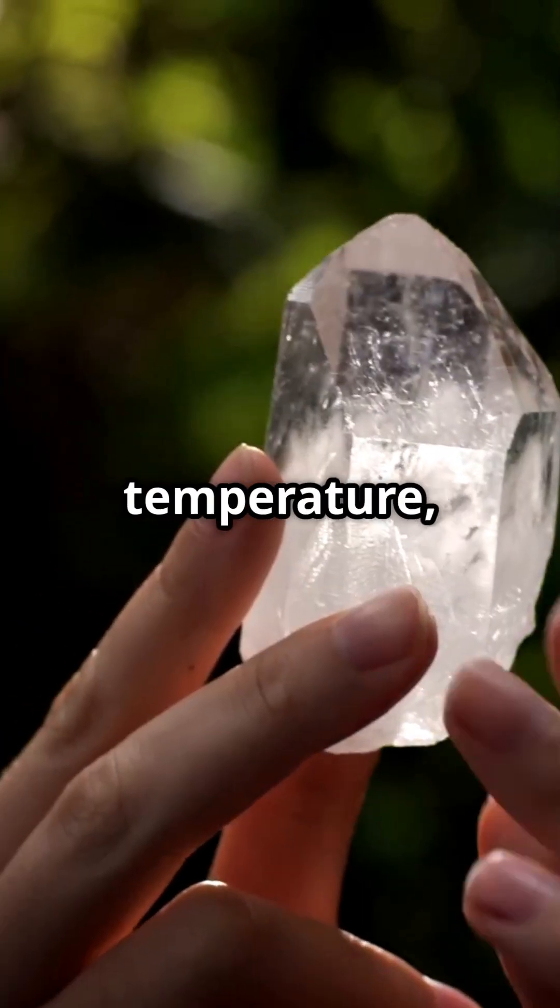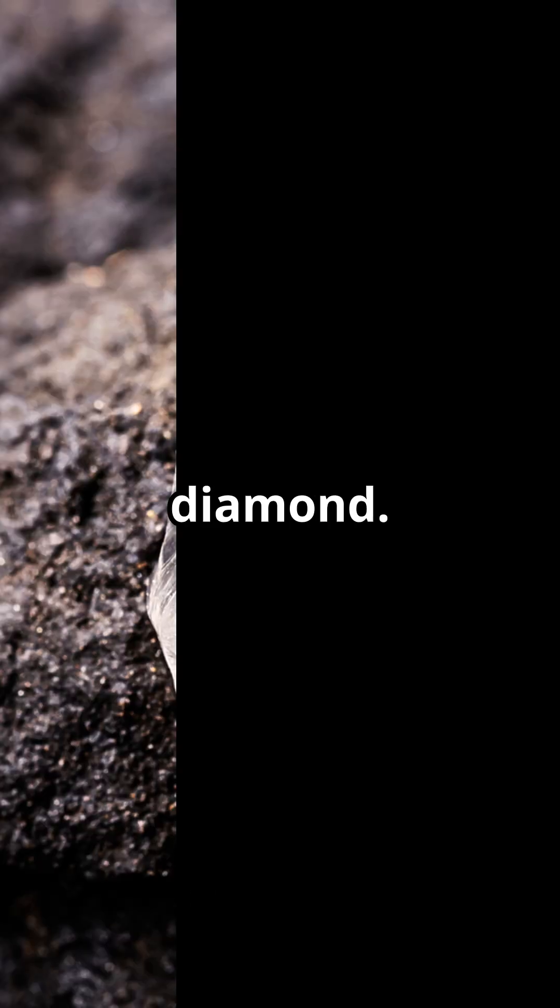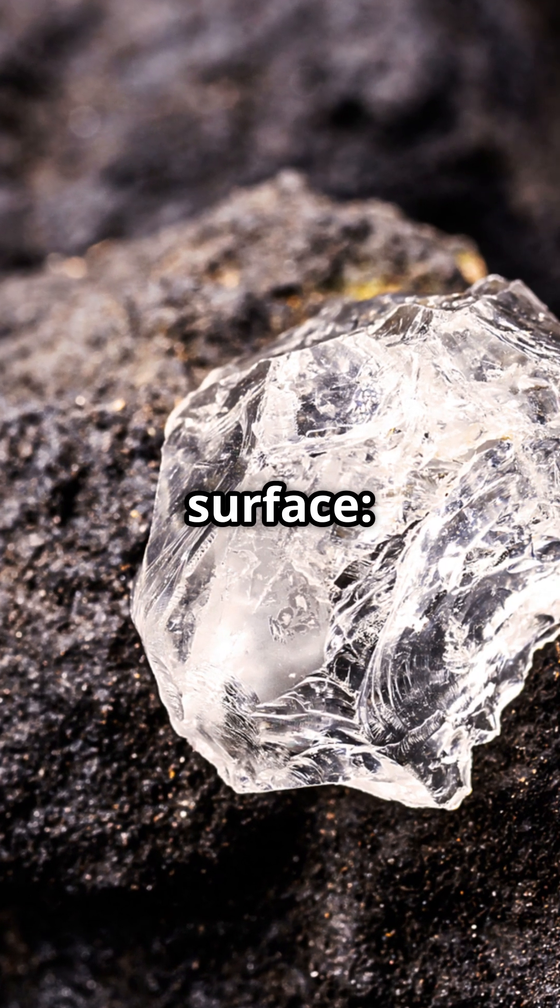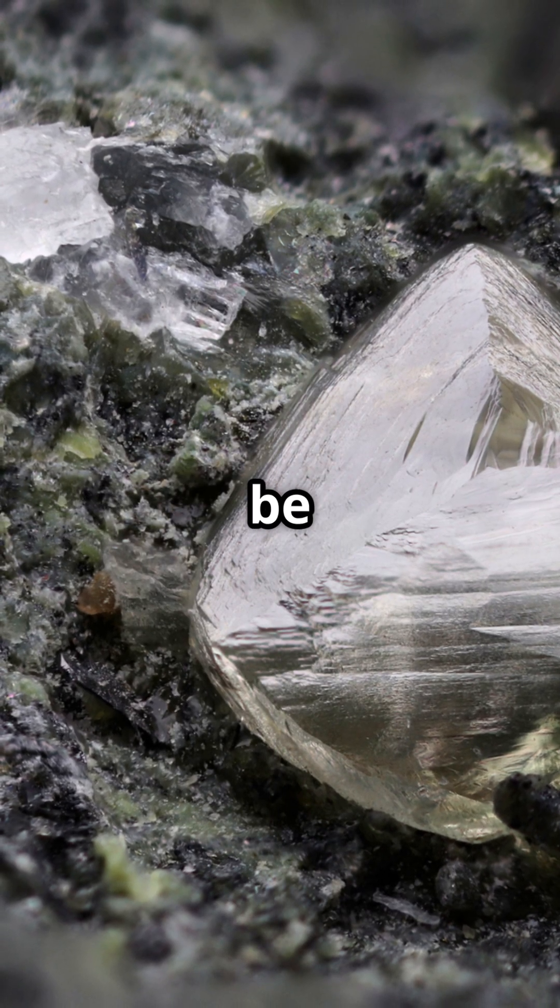Crystallization: under high pressure and temperature, carbon atoms bond into a rigid, compact crystal lattice, the structure of diamond. Transport to the surface: Kimberlite eruptions carry diamonds from the deep mantle up to the Earth's surface, where they can be mined.